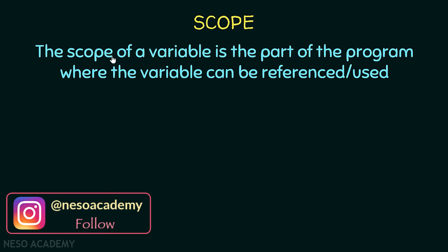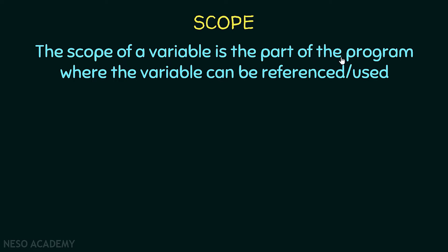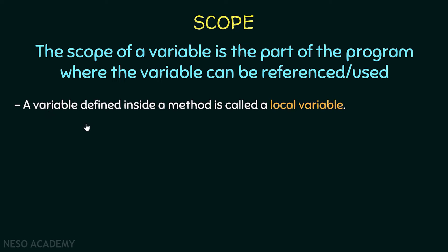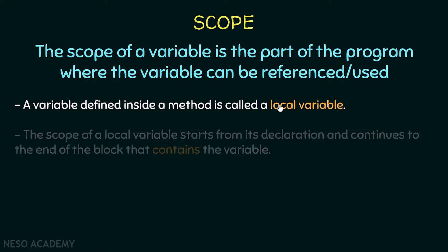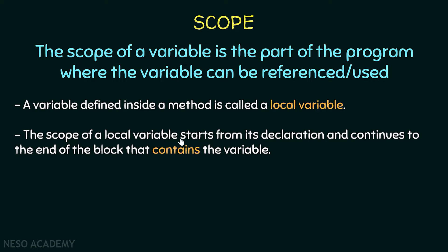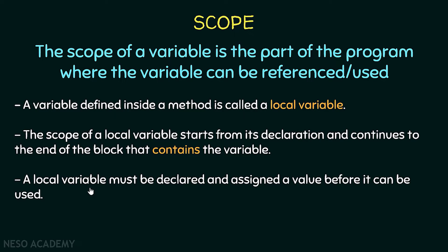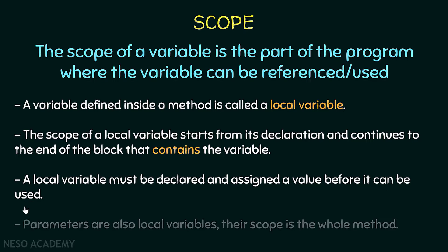What is a scope? The scope of a variable is the part of the program where the variable can be referenced or used. A variable defined inside a method is called a local variable, and the scope of a local variable starts from its declaration and continues to the end of the block that contains the variable. A local variable must be declared and assigned a value before it can be used. Parameters are also local variables, and their scope is the whole method.